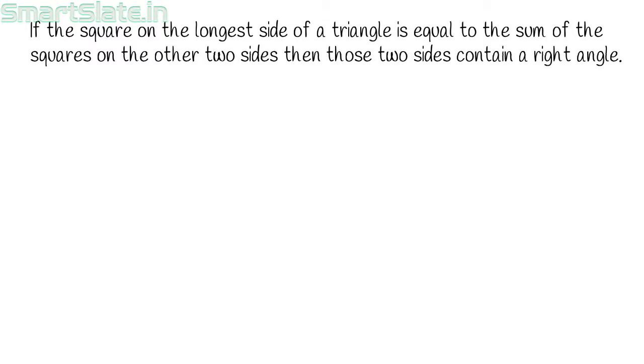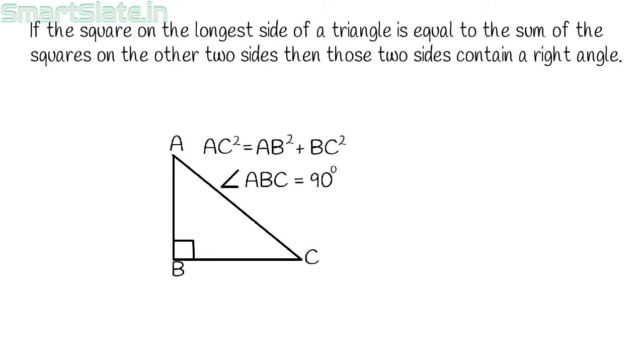It was first mentioned and proved by Euclid. Let's prove this converse theorem. It is given ABC is a triangle and AC square equal to AB square plus BC square. We are supposed to prove angle ABC is 90 degrees.